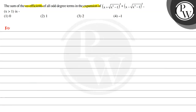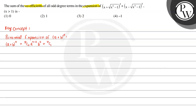The key concept to solve this question is we should know the binomial expansion of (a+b)ⁿ. If we expand (a+b)ⁿ, we will get: nC0·aⁿ·b⁰ + nC1·aⁿ⁻¹·b¹ + nC2·aⁿ⁻²·b² and so on up to nCn·a⁰·bⁿ.